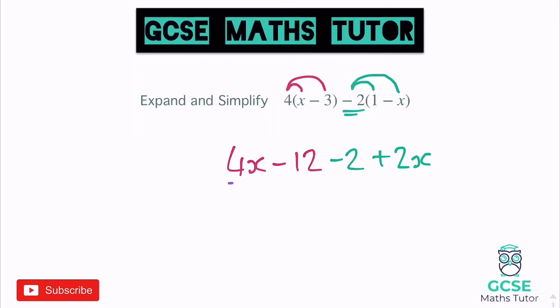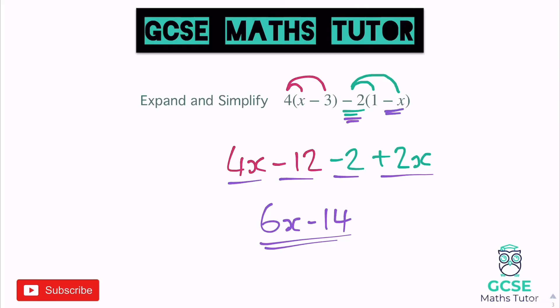Tidying this up: 4x plus 2x is 6x, and negative 12 take away 2 is negative 14. So the answer is 6x minus 14. Be very careful with whether the number is negative — particularly when you multiply a negative 2 by a negative x to make sure your sign is right.